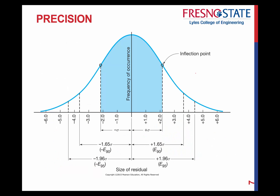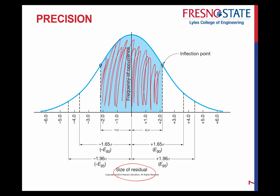Here's another way to look at it: the x-axis shows the size of the residual, and the shaded area shows the frequency of occurrence. Within one standard deviation — plus or minus — 68.3% of the time your value will fall within there. You want a very small residual. All the error should fall as close to the mean and most probable value as possible. This also illustrates where the 90% and 95% error levels sit.